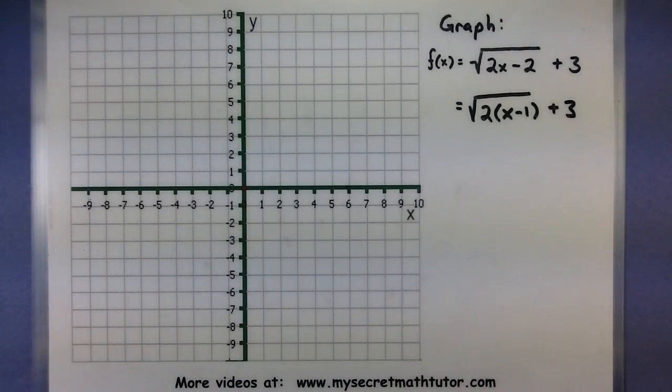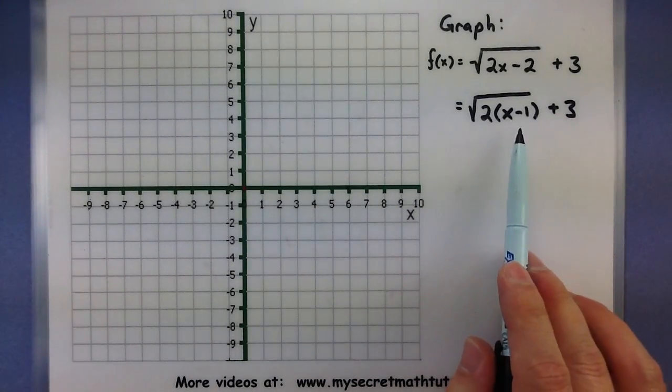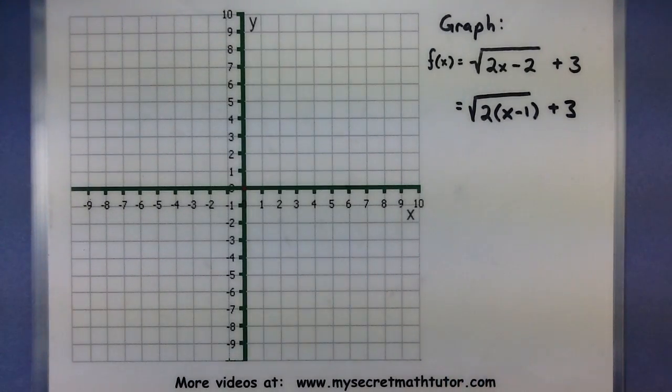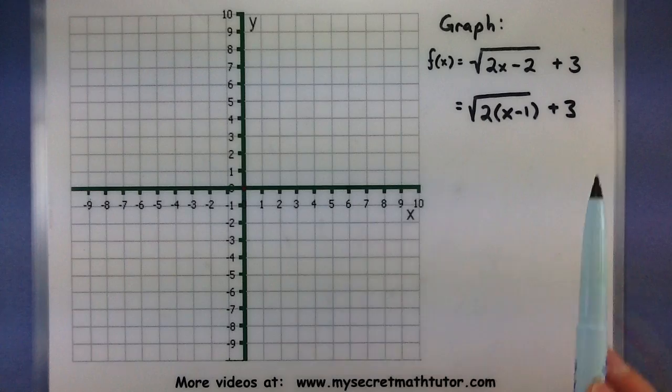All right so we have lots of transformations going on here. It looks like we're shifting right 1, we're doing a horizontal shrink, and we are actually going up 3. Now when we start applying these always work from the inside out.